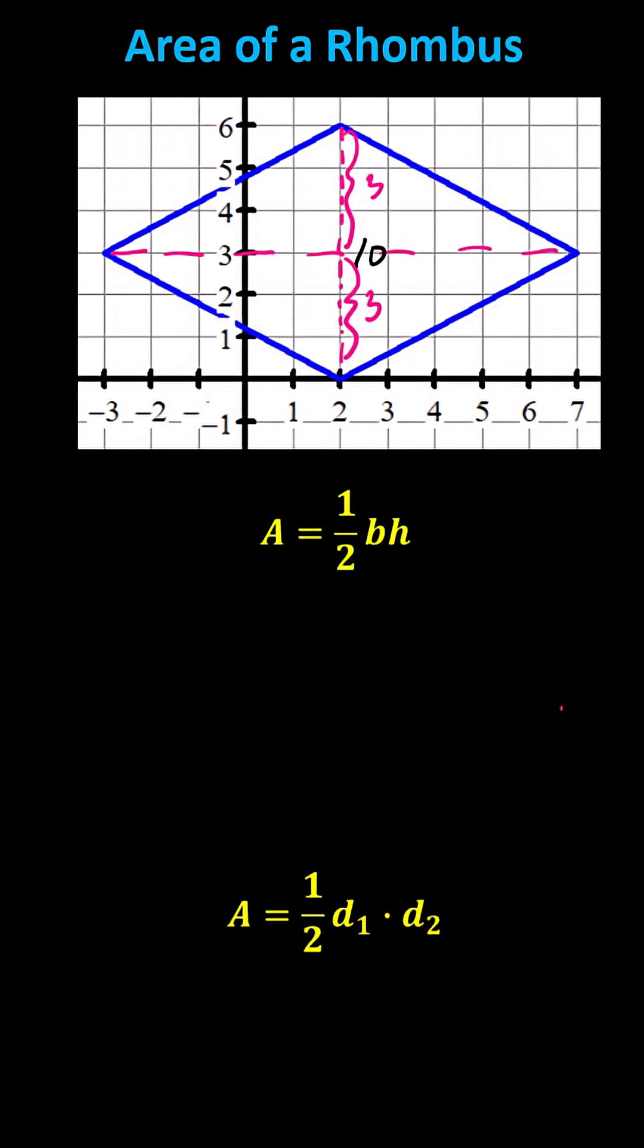Because the triangles are congruent, meaning they have the same base and same height, the total area A can be expressed as A equals one-half base times height plus one-half base times height. Because the base and heights are the same, we can add these like terms by adding the coefficients. One-half bh plus one-half bh equals one bh, or just bh.